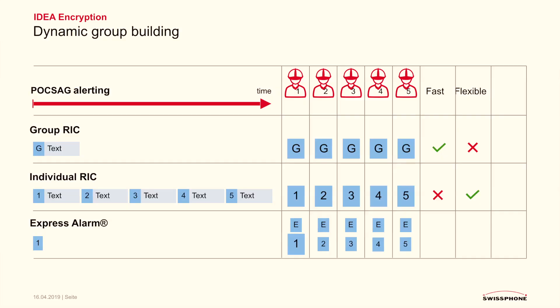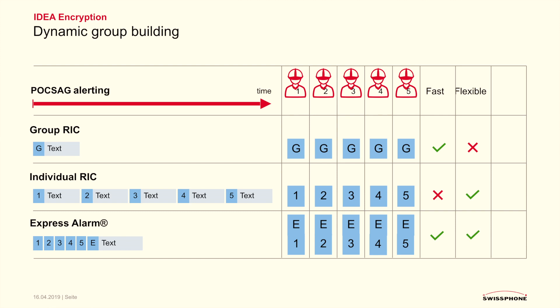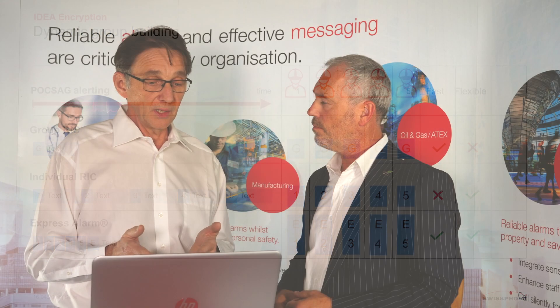If a command and control system has to alert the group, it first sends a very short tone-only call to each individual pager, and at the end a single message common for all pagers — at that point all pagers will signal the reception of the message. If you compare alerting time with the individual RIC method, you will see why this is called express alert. You can save a lot of time and additionally gain flexibility with this kind of alerting.